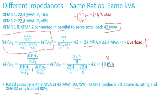The key difference here is impedance. You can see how different impedances can have a significant impact: transformer two is only loaded at 80% of its rating, while transformer one is already loaded 6.6% over its rating — and we're only at 93.75% loading of the entire station.